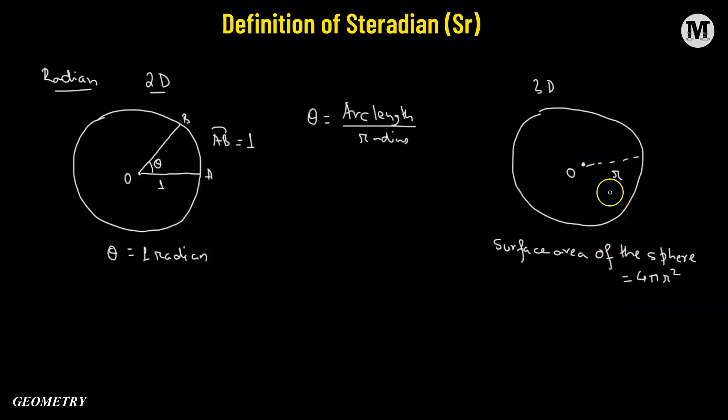Now, we are going to consider a portion on the surface of this sphere. Let's say we take a particular portion on the surface, and let's say we take x percentage of the total surface area in such a way that the area of this small region is given by R², the radius squared. Then, in that case, the angle which is subtended at the center of the sphere is going to be defined as the solid angle. So this angle is going to be referred to as one steradian.